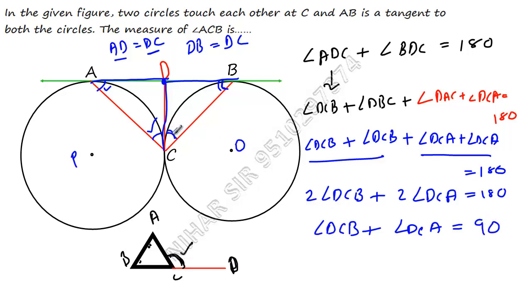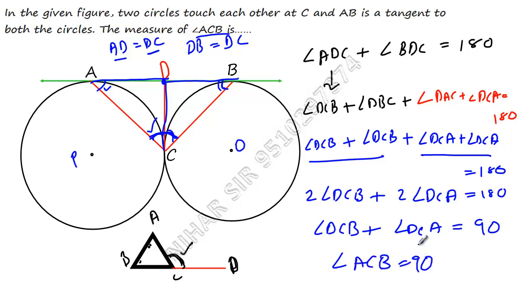Now DCB plus DCA together form angle ACB. So angle ACB equals 90°. Isn't it very simple? I hope you find it useful. Thank you.